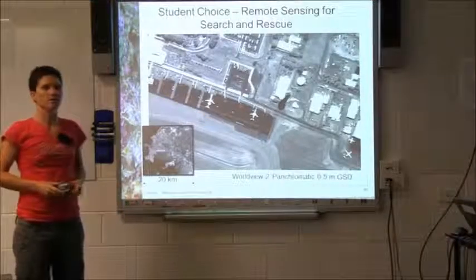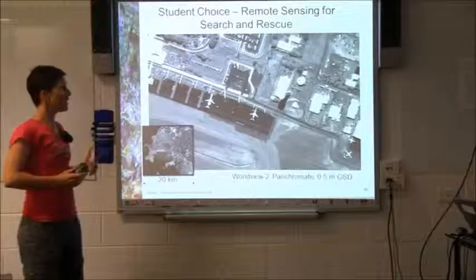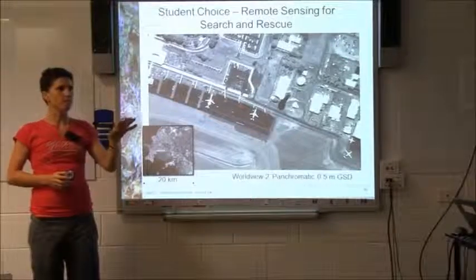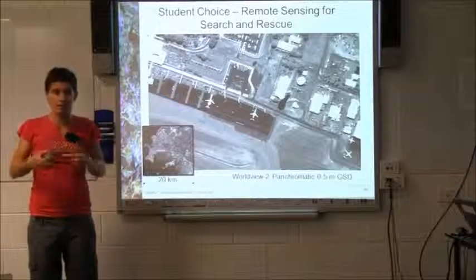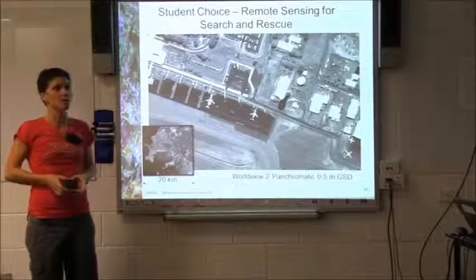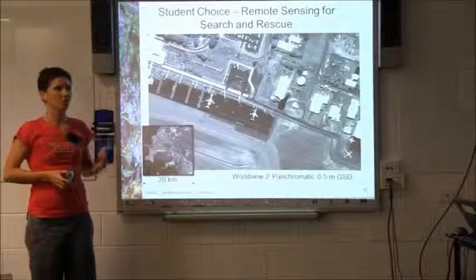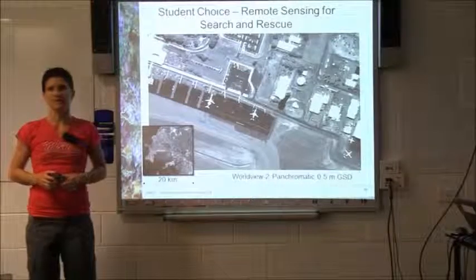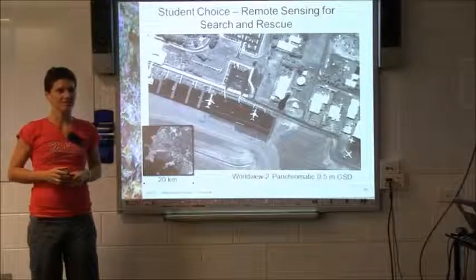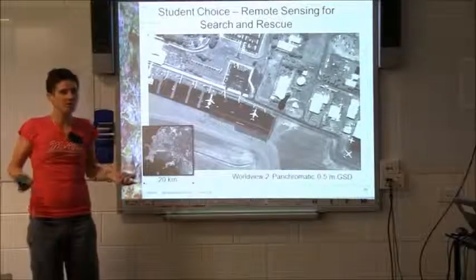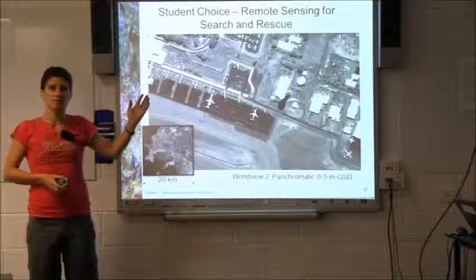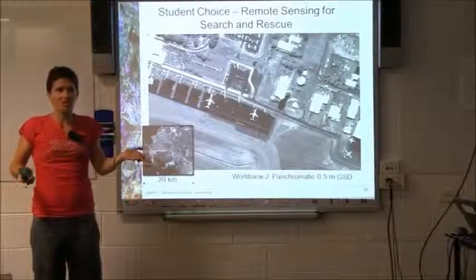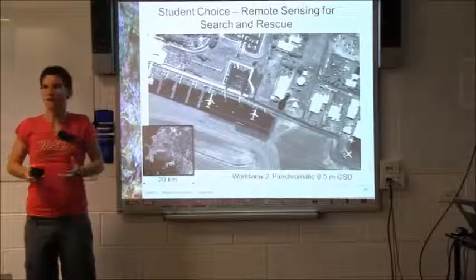It comes down to a few things: money and manpower. There was some crowdsourcing — getting people to look at the images and see if they can pick anything up. But when you get down to trying to find a grain of couscous at the MCG, it's luck. So the question again: can we use remote sensing to find the plane? It's potentially possible — it's not out of the question — it's just extremely difficult. It's theoretically not impossible.